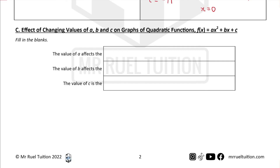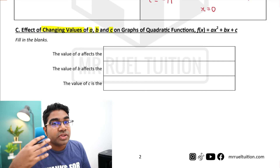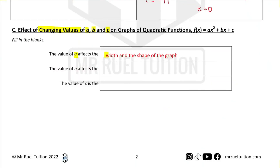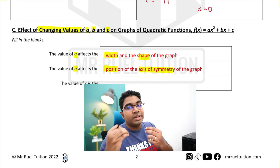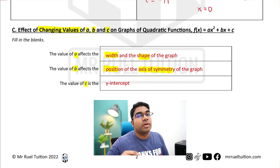Let's go on to the effect of changing values of a, b, and c on the graphs of quadratic functions. I encourage you to explore this using a graphing calculator — I'll leave a link for a free graphing calculator in the description. The value of a affects the width and shape of the graph. The value of b affects the position of the axis of symmetry. And the value of c is the y-intercept of the quadratic curve.